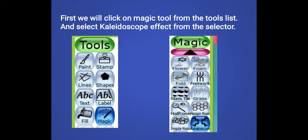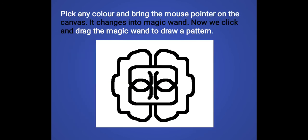We can just use the magic effect tool and from the right side selector we can use kaleidoscope effect. Now we will pick a color also and we will bring the mouse pointer in the canvas area. It changes into the magic wand and now we will click on one point and drag the magic wand to draw a pattern.